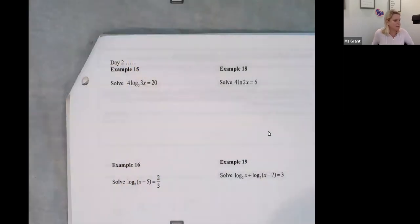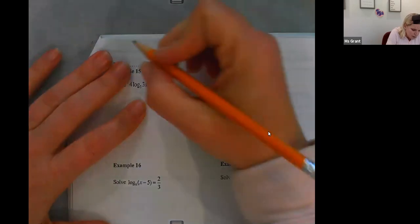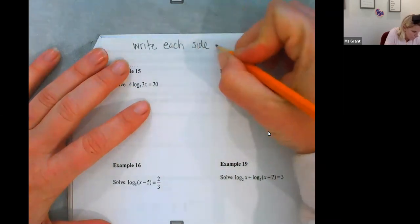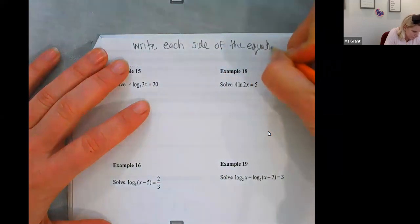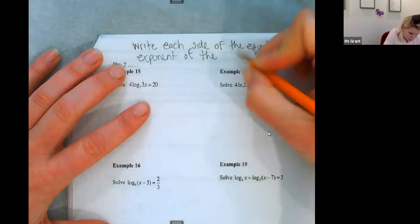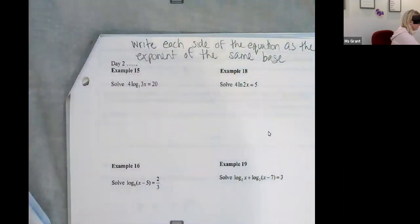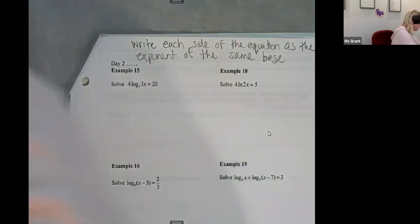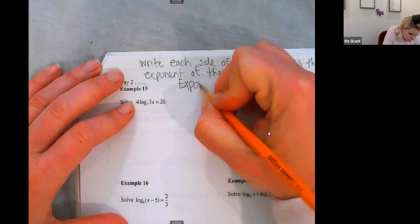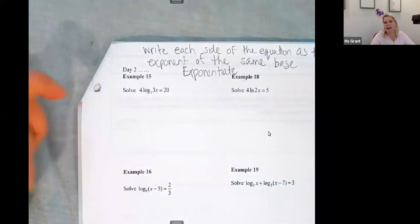15. So let's talk about the rules for this page. This page has some new information, some new types of problems. So I'm going to, here's my little how-to. Write each side of the equation as the exponent of the same base. So this word, this definition is called exponentiate.